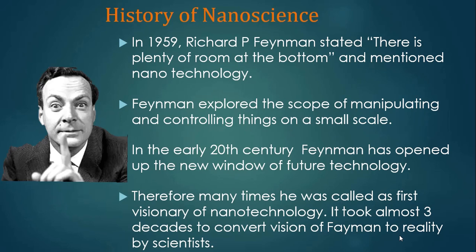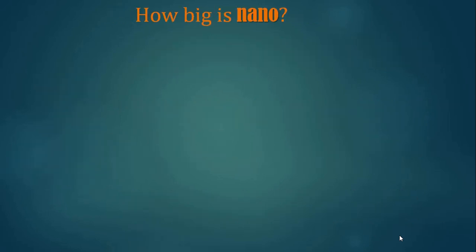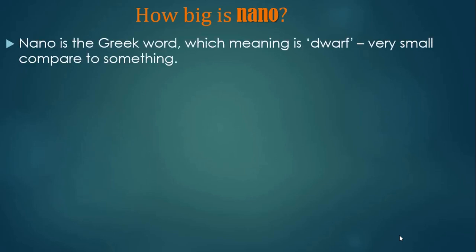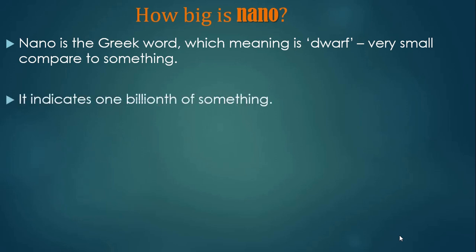Let's understand Feynman's nano world — how big is nano? The word 'nano' is Greek, meaning dwarf — very small compared to something. It indicates one billionth of something. So a nanometer is one billionth of a meter: 1 nanometer equals 10 to the power of minus 9 meters.